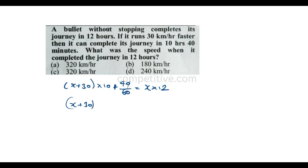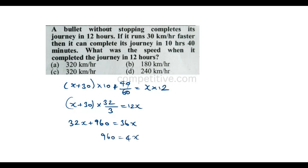32 by 3 is equal to 12x. Expanding: 36x = 32x plus 960. Therefore 960 is equal to 36x minus 32x, which gives 4x = 960.